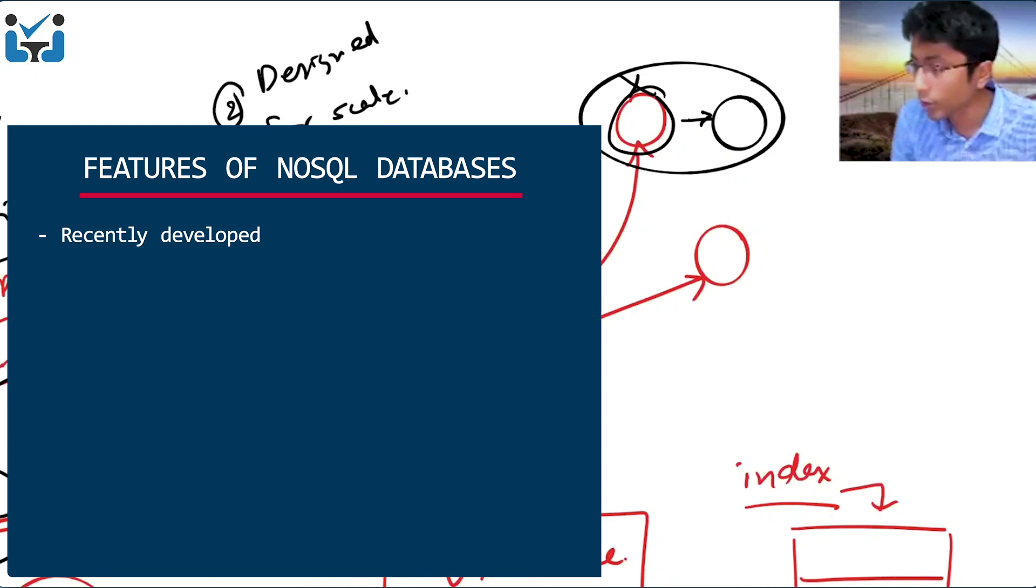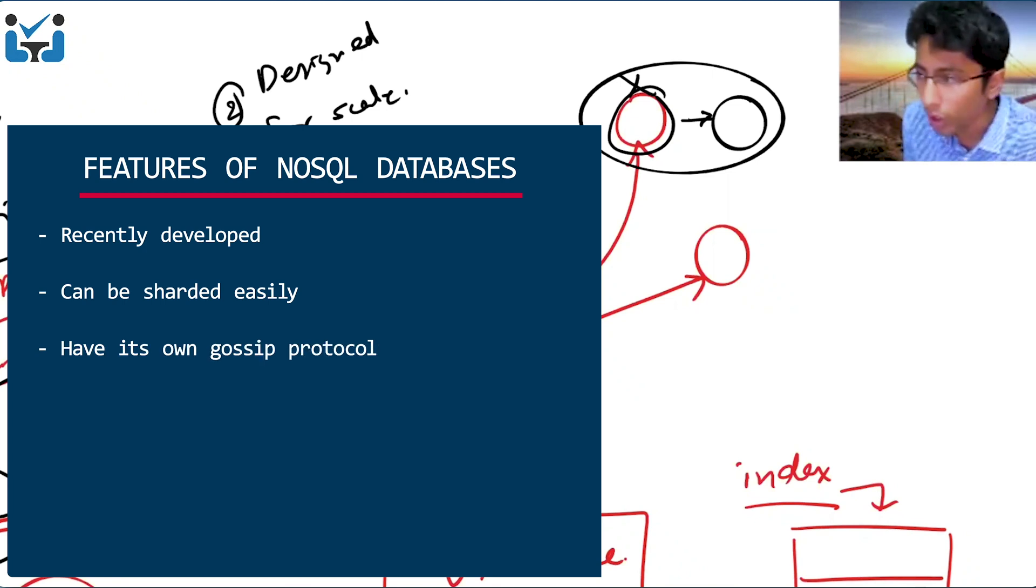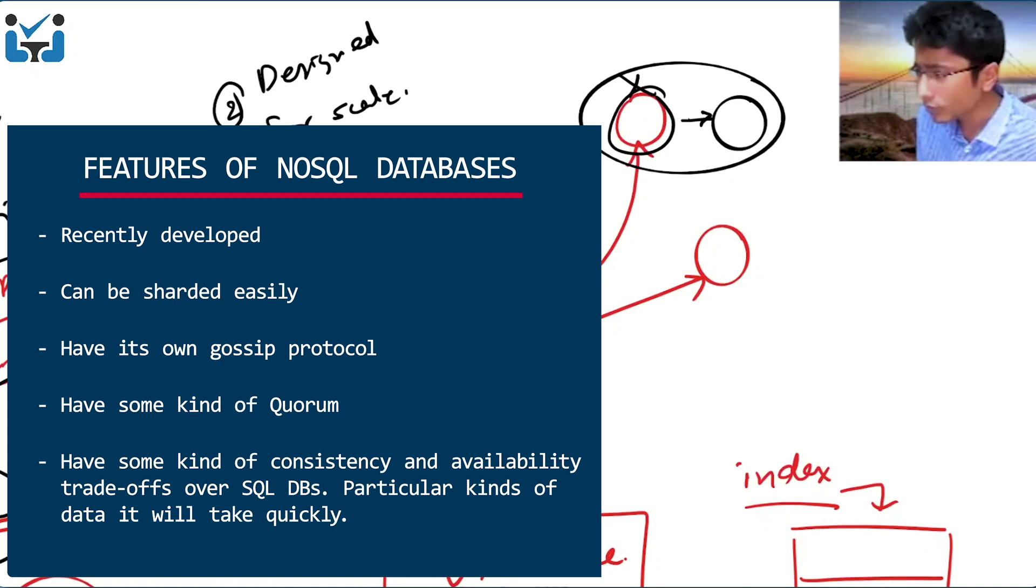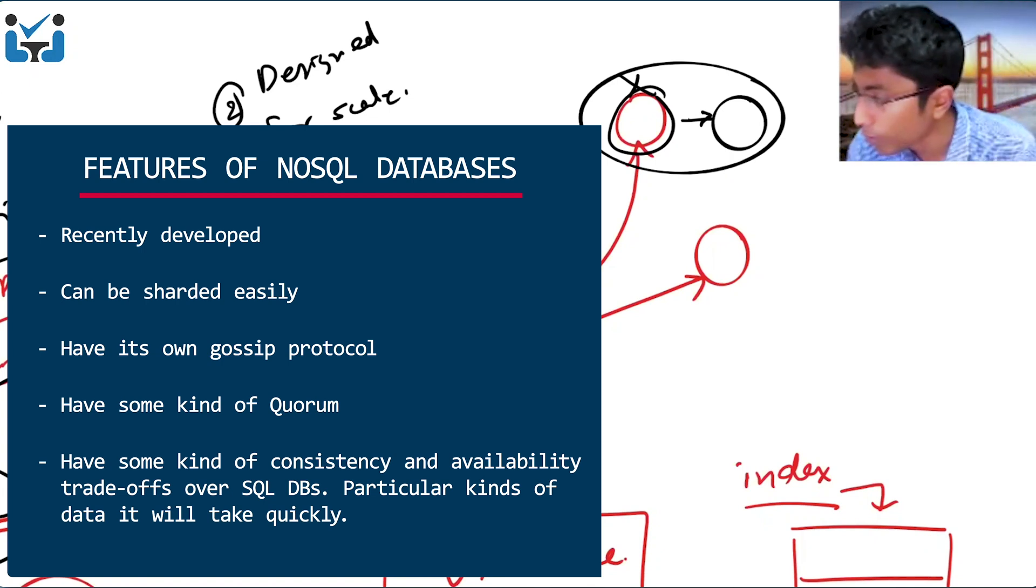which will be ready to be sharded easy, which will have its own gossip protocol, which will have some sort of quorum, which will have some sort of consistency and availability trade-offs, will perform at a particular kinds of data. Maybe, you know, it's not that the SQL databases don't provide it sometimes that you have to write it yourself.